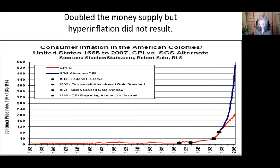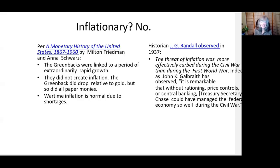You can see from this slide that the greenbacks were not inflationary. This is the consumer price index, and it has shot up in the last 60 years — but during the Civil War period, it was not significantly inflationary. Milton Friedman and Anna Schwartz, in their volume A Monetary History of the United States, said the greenbacks did not create inflation. They did devalue relative to gold, but so did all the paper monies — and there were hundreds of paper monies then, since state-chartered banks all issued their own banknotes. Friedman and Schwartz also said the greenbacks were linked to a period of extraordinarily rapid growth.